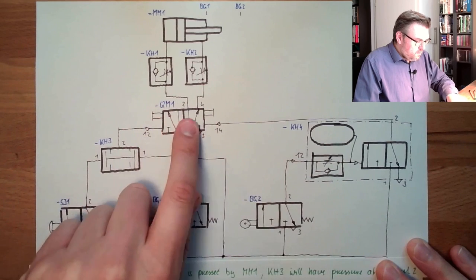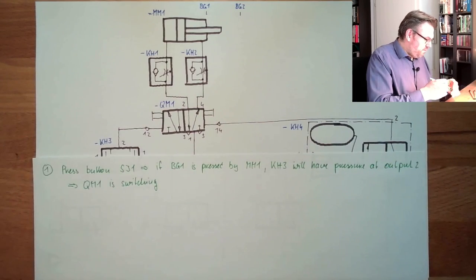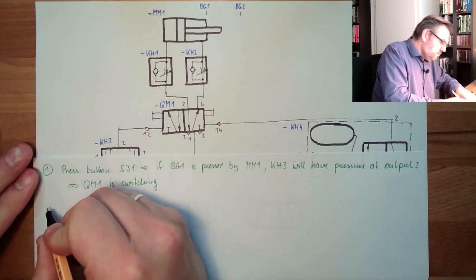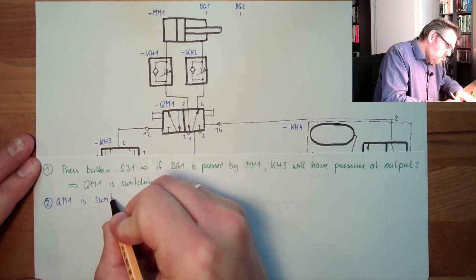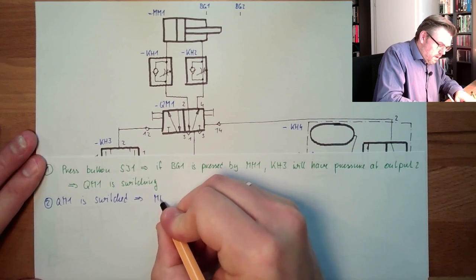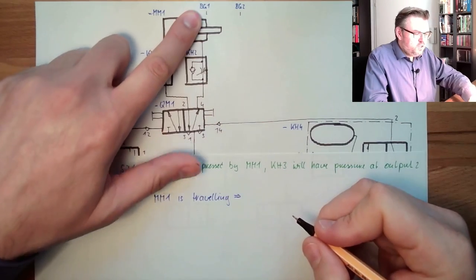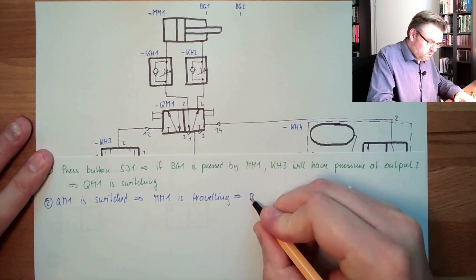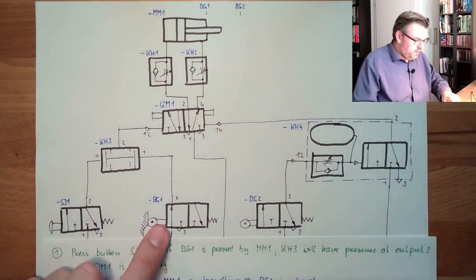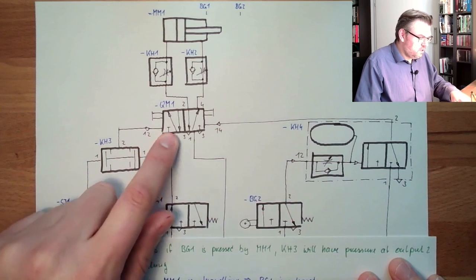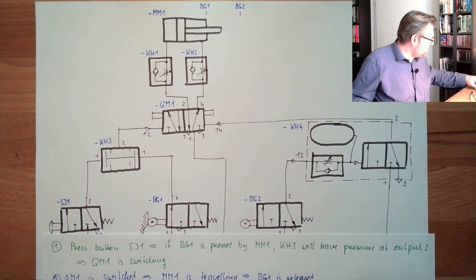Which will lead to the fact that QM1 is switching. So QM1 is switching now. This means I have pressure at the two line. I have no pressure at four. This means MM1 is traveling. So this is the second step. QM1 is switched, MM1 is traveling.